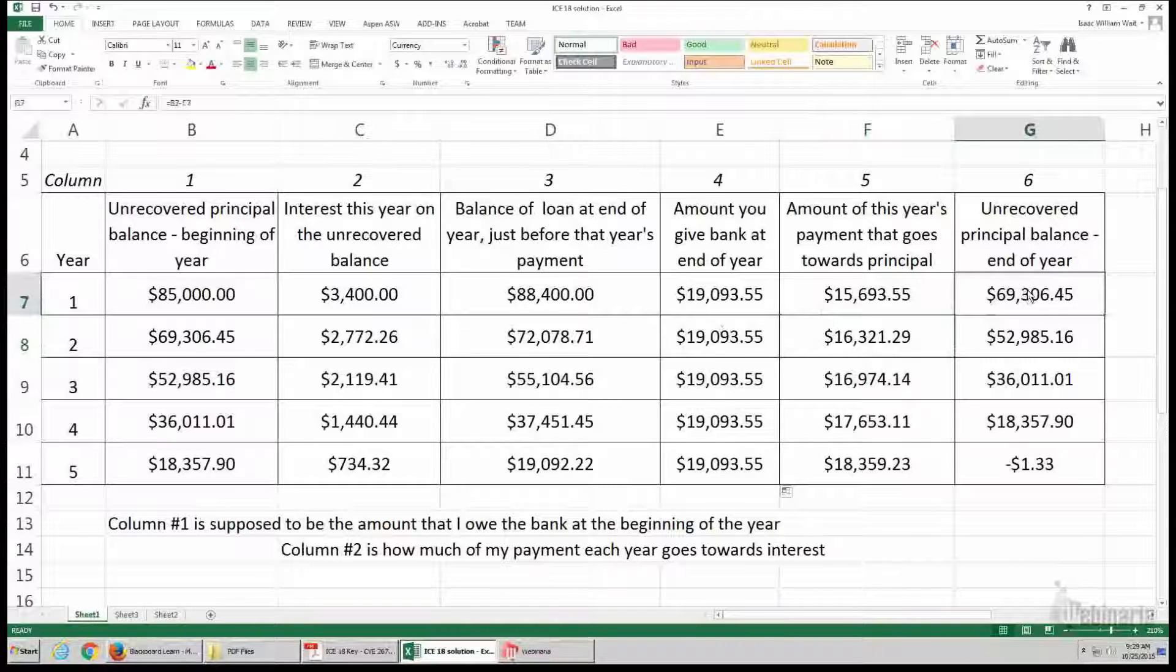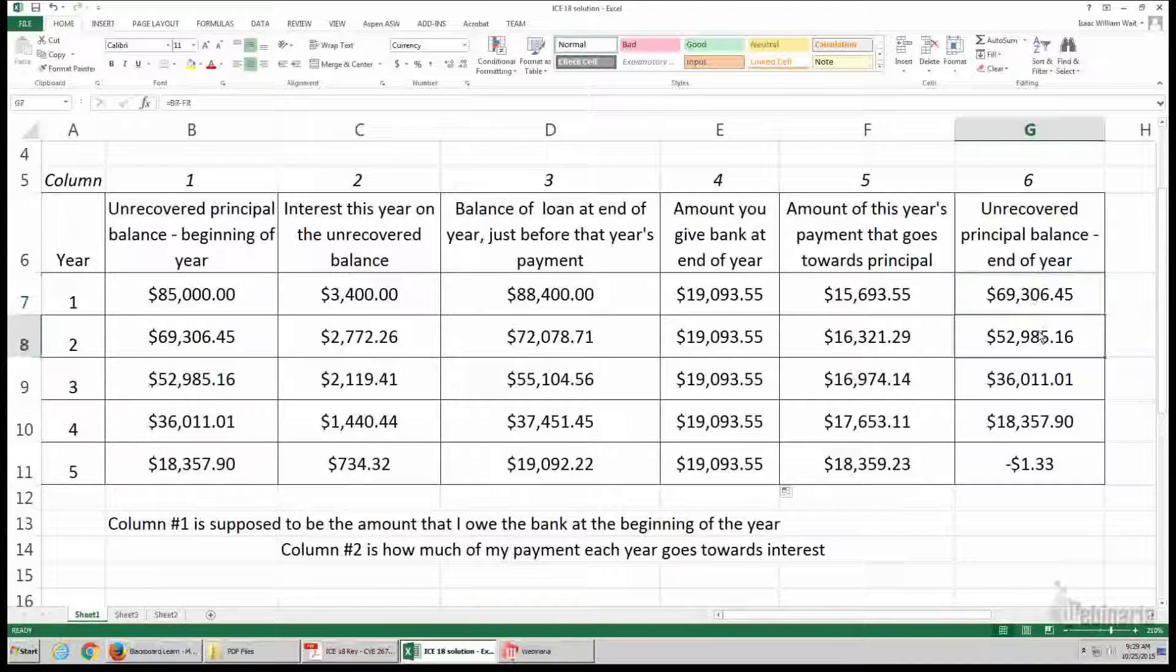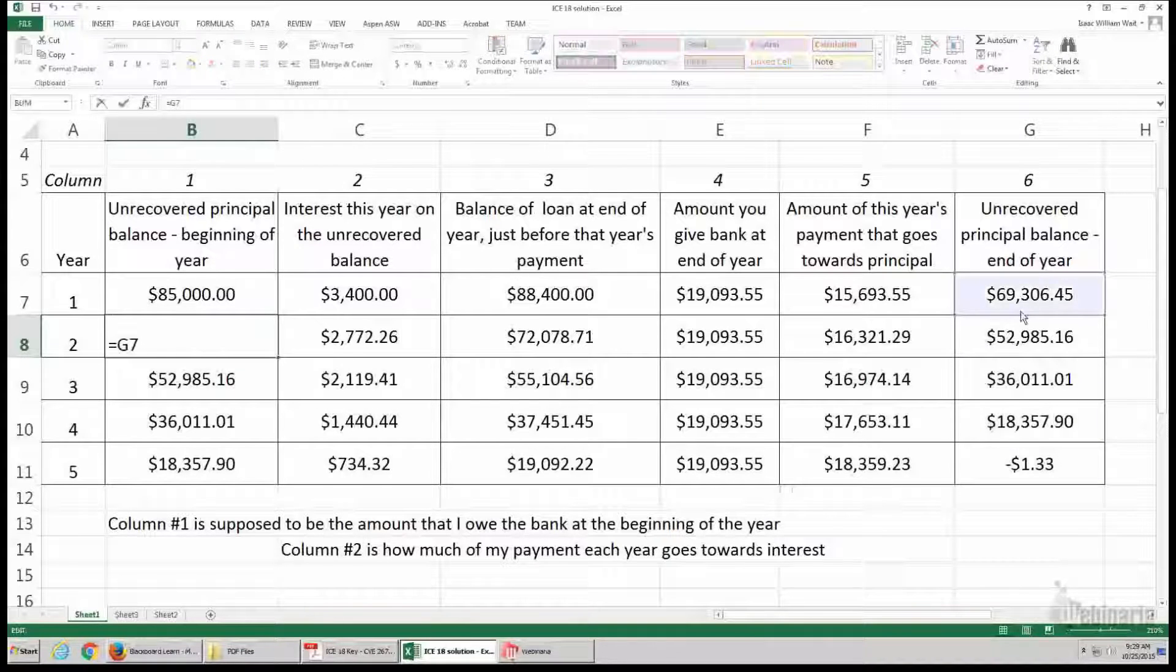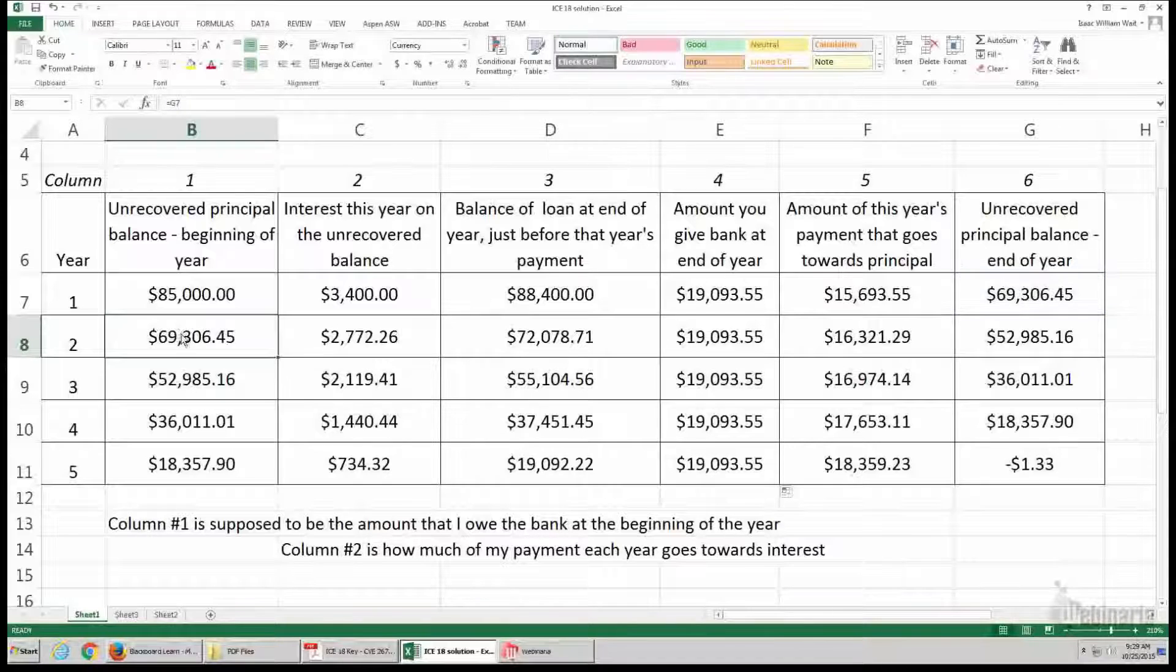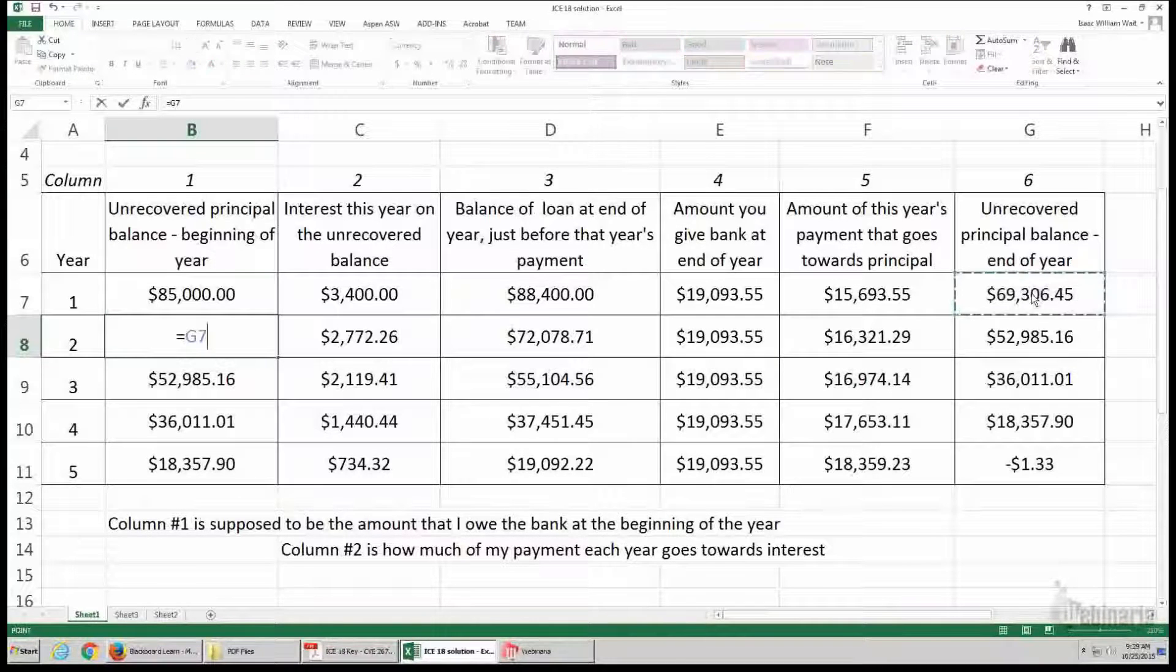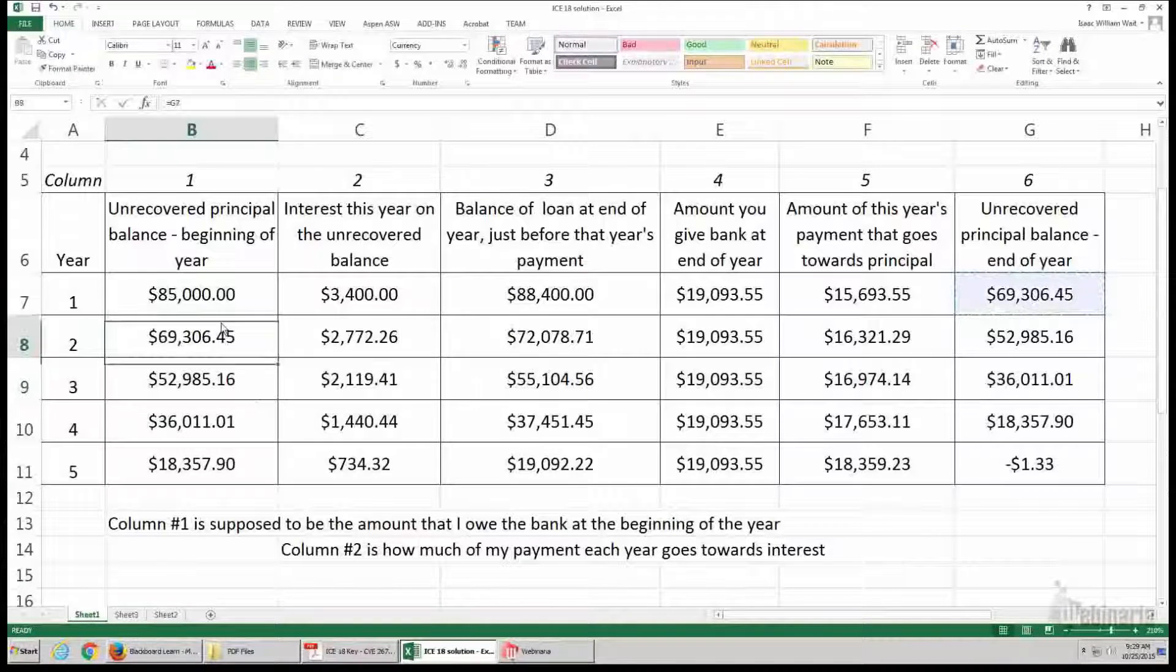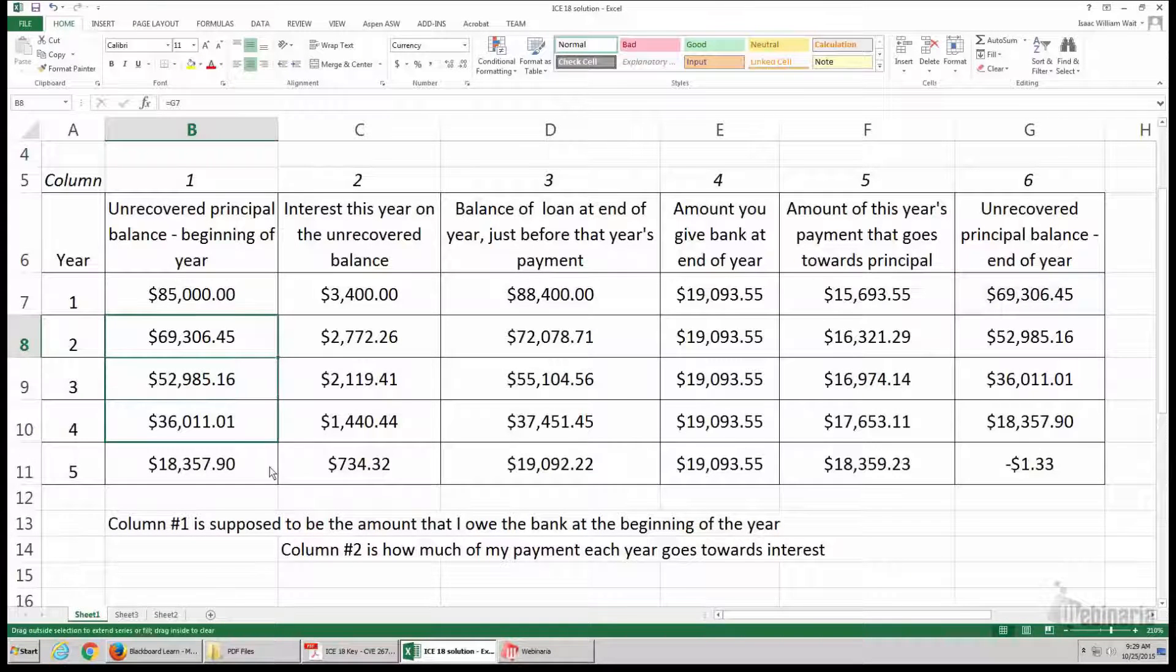So this is showing after you make the payment how much you owe. And so here you can just click equals and highlight the cell. You don't have to type in the amounts. Excel is always going to save you time if you just have a few simple tricks. Instead of typing in this value, just click equals and select there. And then you can drag it down, and it'll be looking in the correct spot.